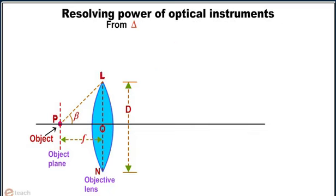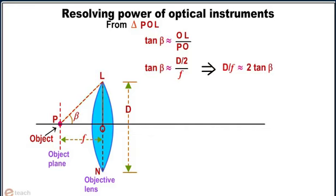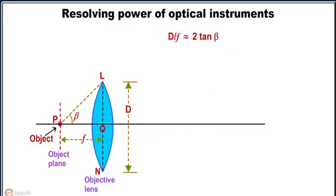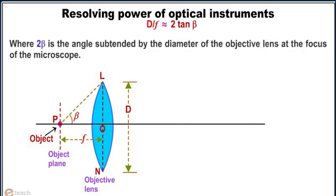From triangle Pol, tan beta is equal to OL by PO. This implies tan beta is approximately equal to d by 2f. This implies d by f is approximately equal to 2 tan beta, where 2 beta is the angle subtended by the diameter of the objective lens at the focus of the microscope.